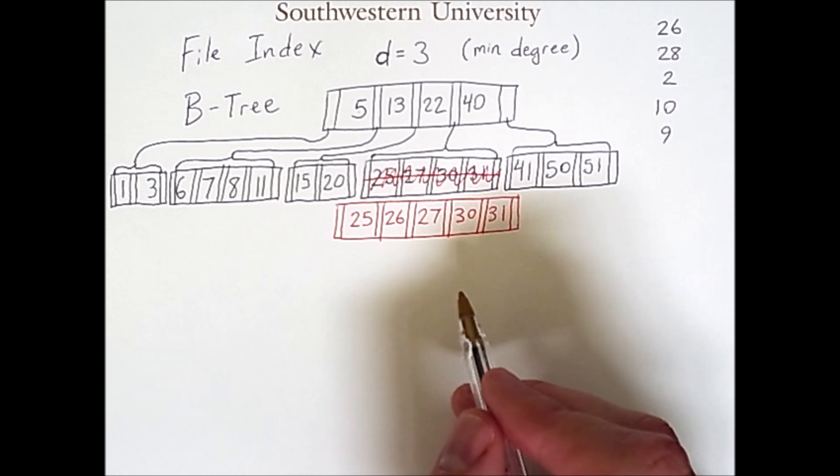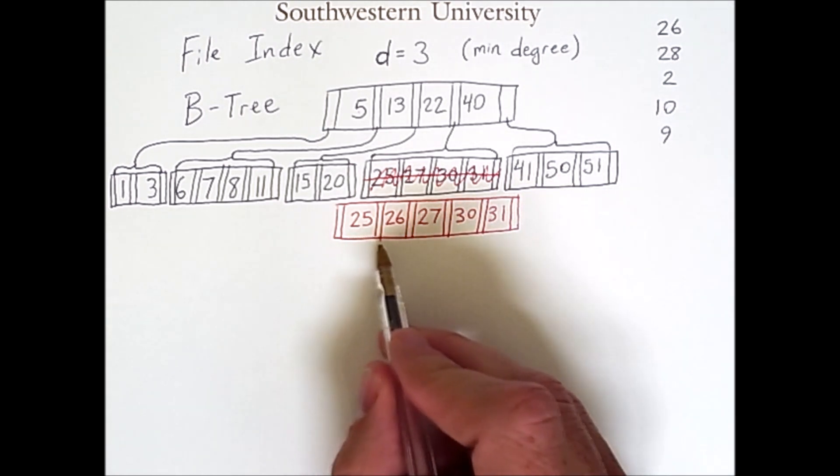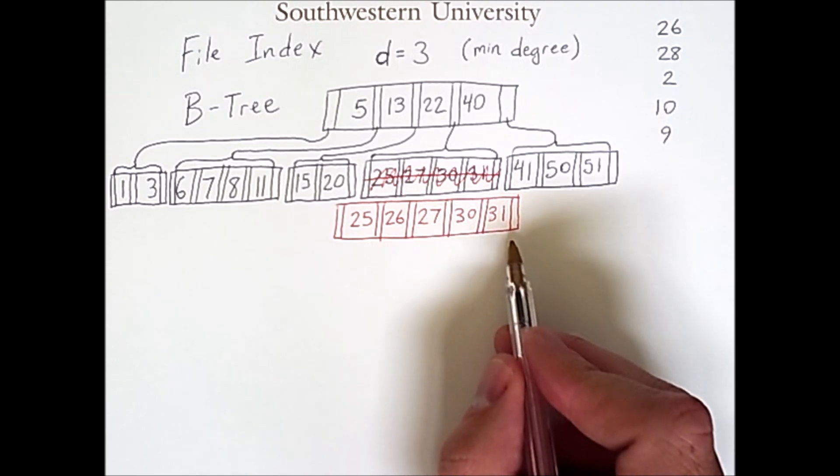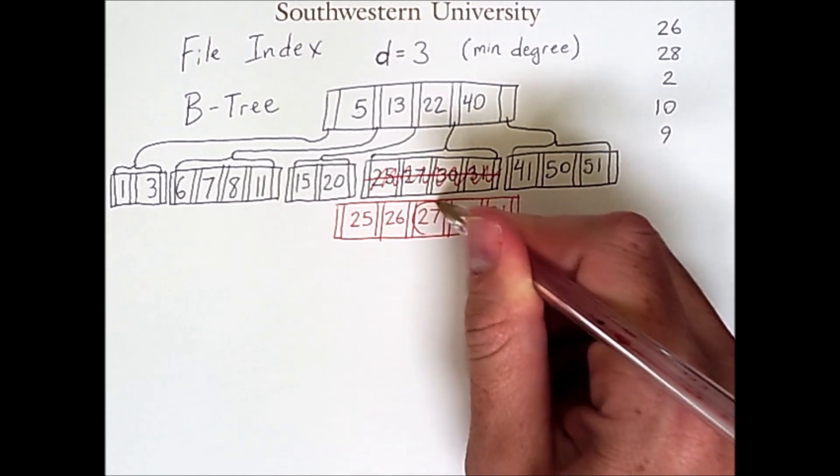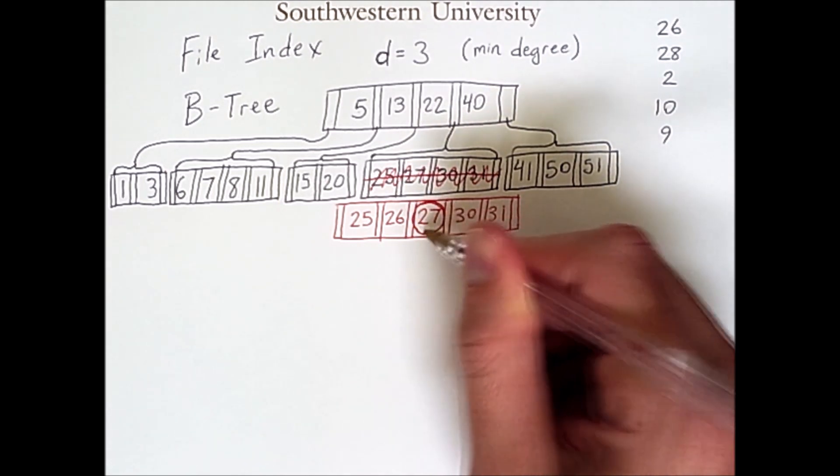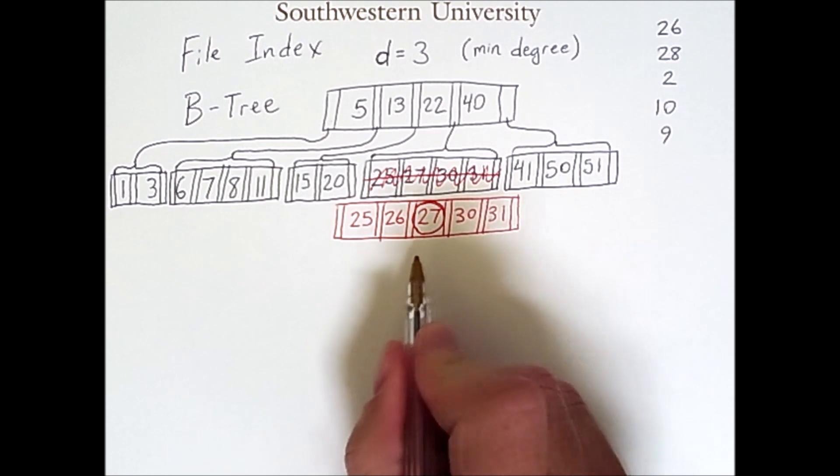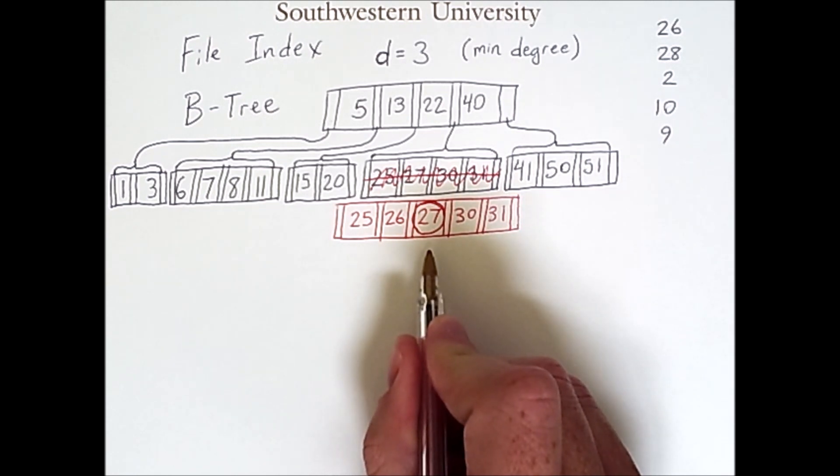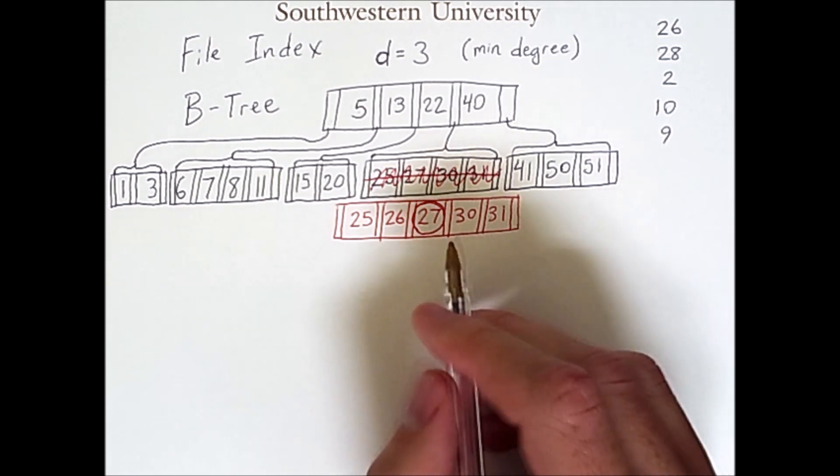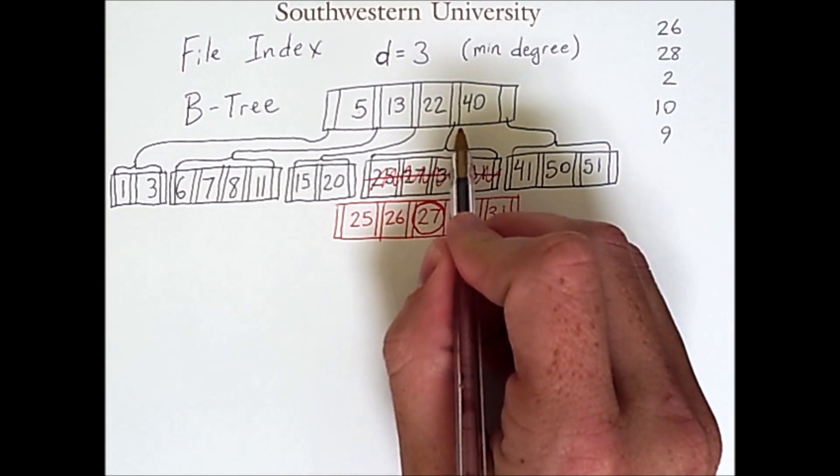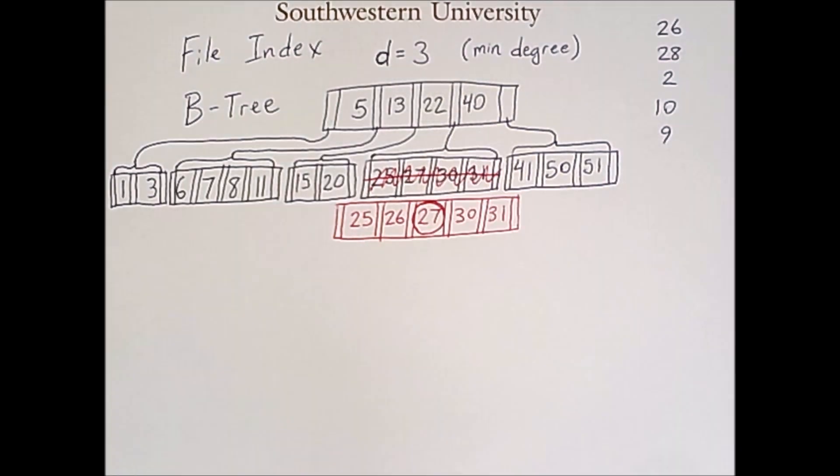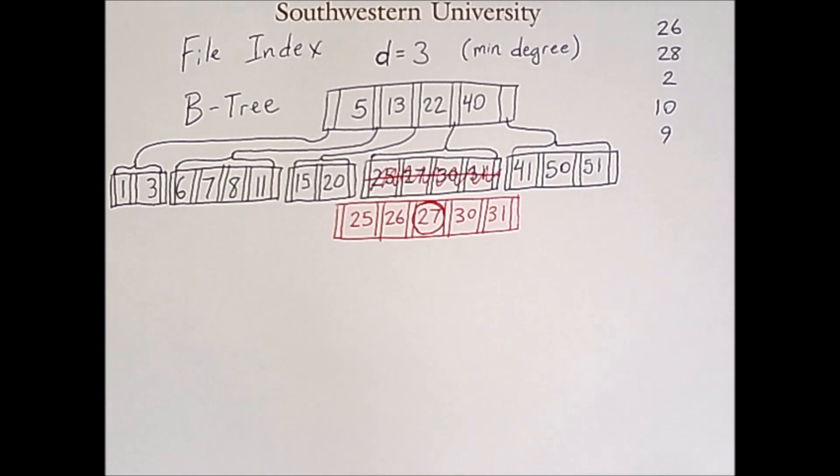So the way we get around this problem is the following. We look at this node and we identify its median value, which will always be the one in the center, in this case 27. So 27 is the median middle value of this node. So what we will do is promote this 27 up to the next layer, giving us the following result.